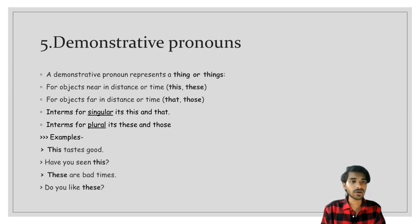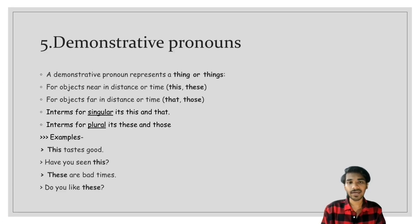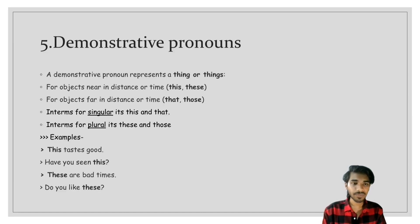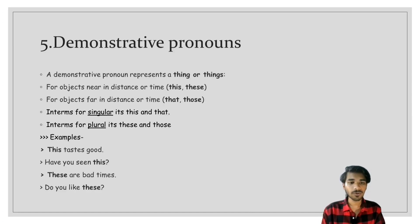The fifth type is demonstrative pronoun. A demonstrative pronoun represents a thing or things. For objects near in distance it is 'this' or 'these', and for objects far in distance it is 'that' or 'those'. Singular: this or that. Plural: these or those. Examples: 'This tastes good' — near and singular. 'Have you seen this?' — singular and near. 'These are bad times' — 'these' is demonstrative. 'Do you like this?' — 'these' is demonstrative.